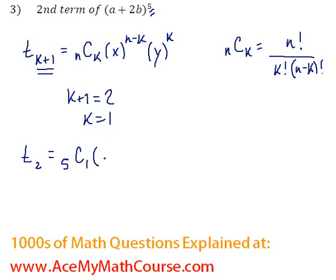times the first term, which is a, to the power of 5 minus k, so 5 minus 1, times 2b to the power of k, which is 1.